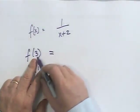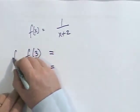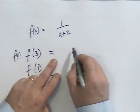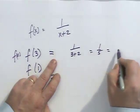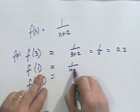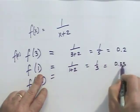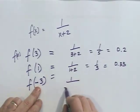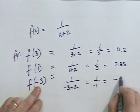So when you substitute x into that function, for 3 plus 2, that equals 1/5 or 0.2. For 1 plus 2, that equals 1/3. And for -3 plus 2, that equals 1/(-1), which equals -1.